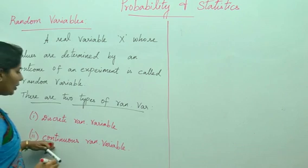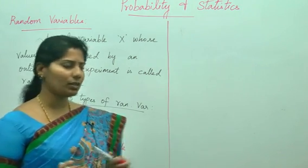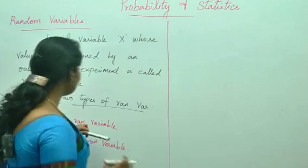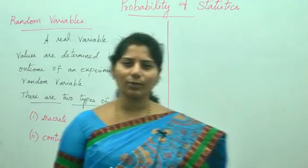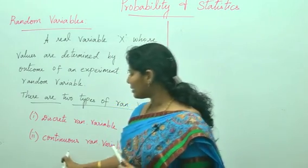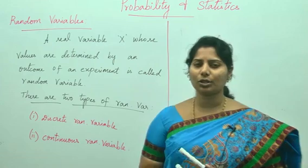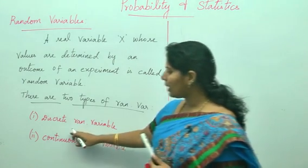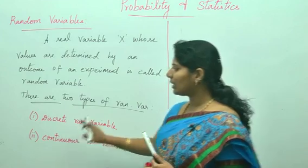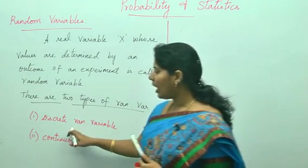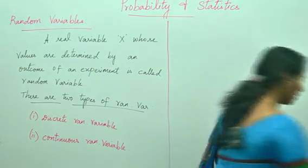For both types of random variable we need to satisfy some conditions. For the discrete random variable we need to use the probability mass function, and for the continuous random variable we need to use the probability density function. First I will explain in detail what is a discrete random variable, and then I will move on to the continuous random variable along with examples.